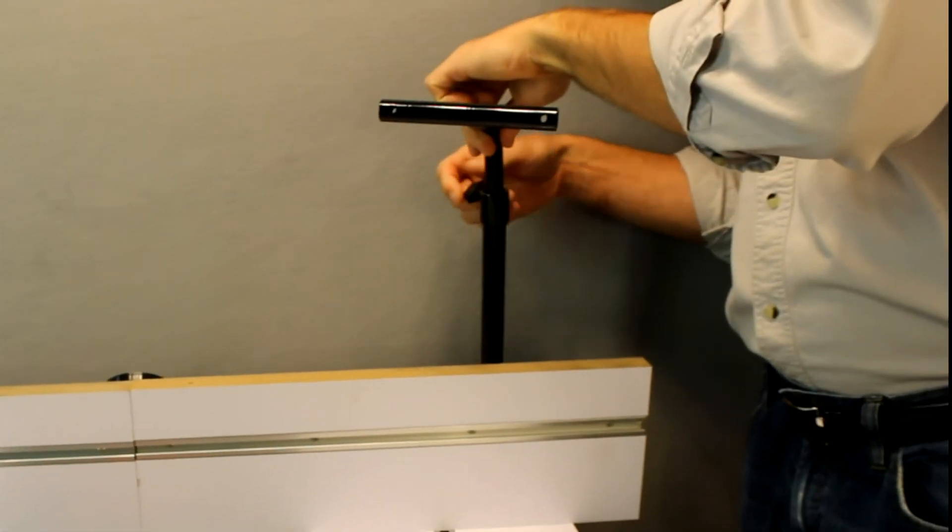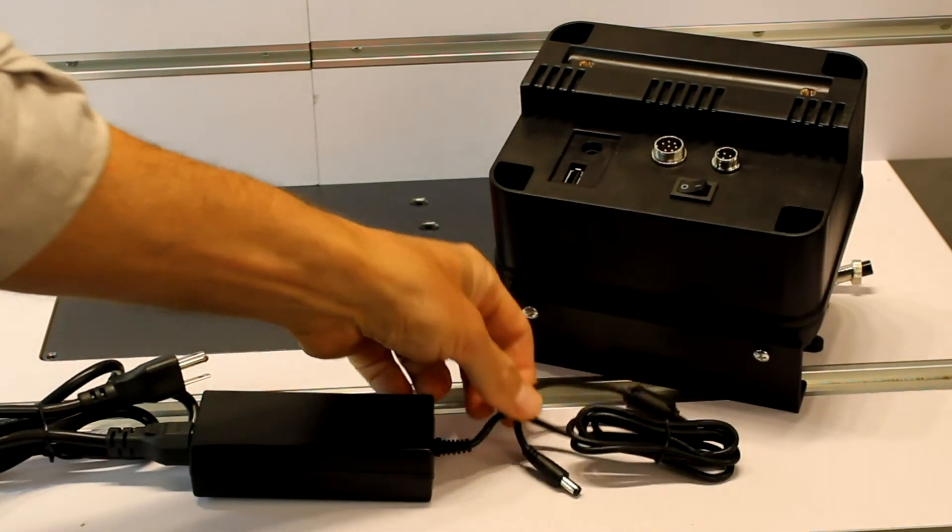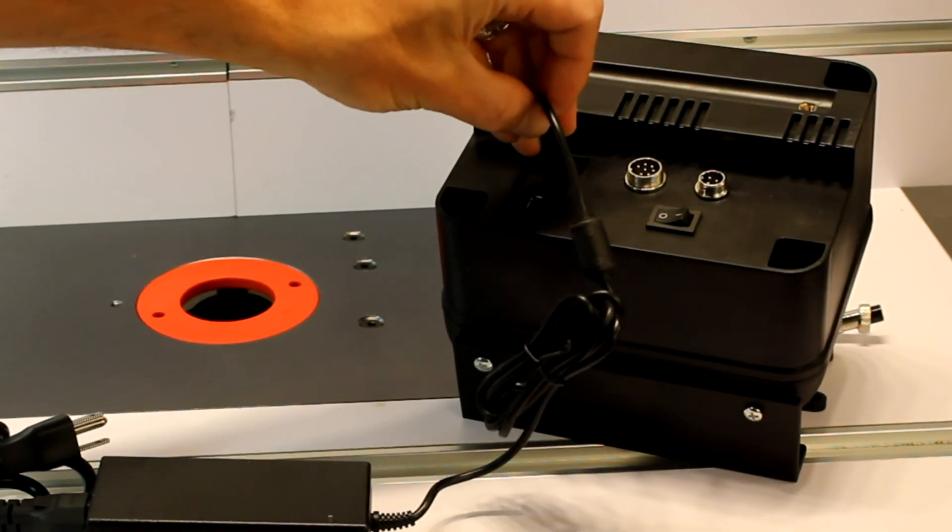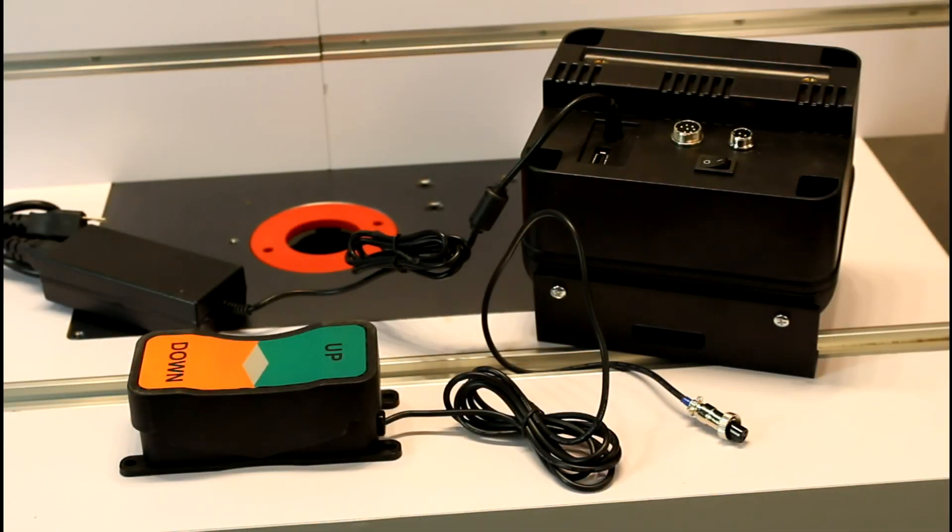The first connection we'll make to the ECB is the AC power adapter. It simply plugs into the port on the back. All of the connections on the back of the ECB are unique so you can't plug something into the wrong place.